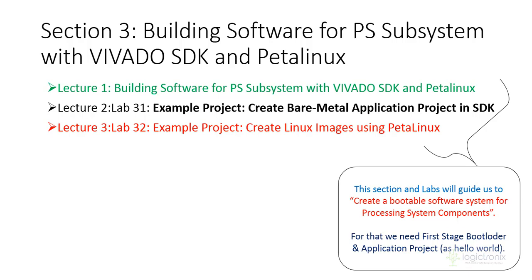Lecture 2 is Lab 3.1, which is an example project. In that lecture, we are going to learn about creating a bare metal application project in SDK. Lecture 3 is Lab 3.2, which covers creating Linux images in PetaLinux. So Lab 3.1 is based on SDK using First Stage Bootloader and a parameter application, and Lab 3.2 is based on PetaLinux, where we are going to utilize some PetaLinux commands.